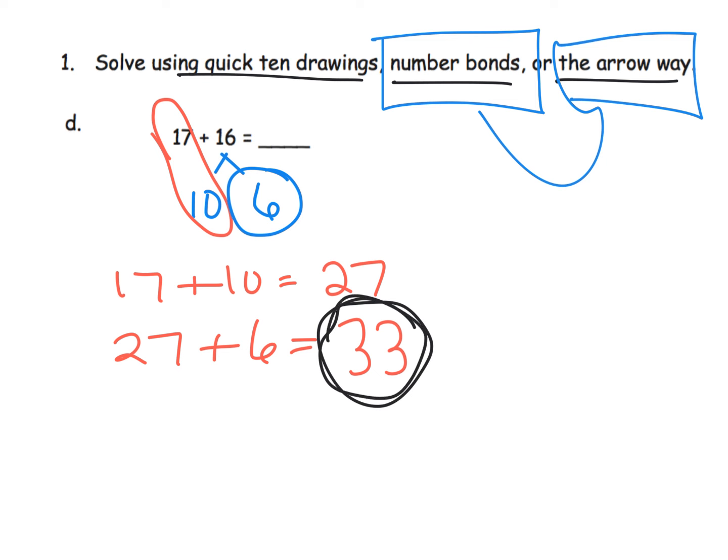And how did we get 33? Well, some of our students might count on 27 and then count on 6 more. Some students may add the 7 and the 6, get 13, and then add in the extra 20. You can actually run an entire number talk on this one problem alone.